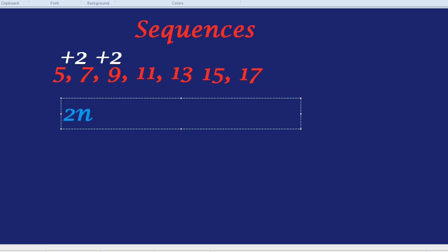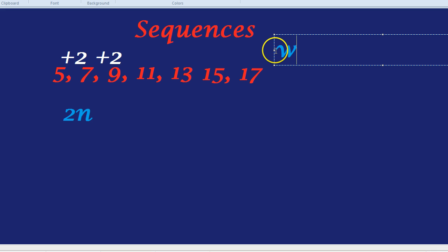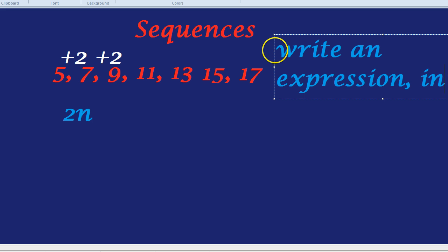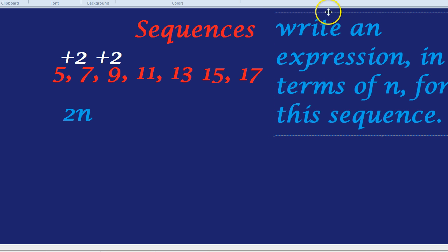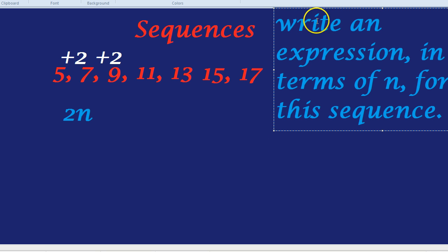n is the letter used by mathematicians to express different sequences and different patterns. Often the exam question might be phrased in a way like, write an expression in terms of n for the pattern of the sequence, for this sequence. It's 2n because this sequence is going up in twos. And what 2n represents is almost like the two times tables.